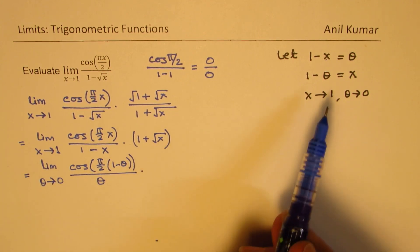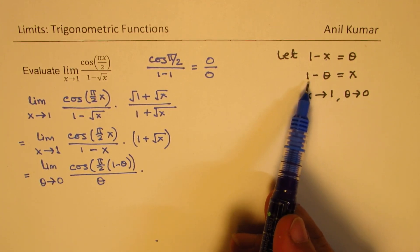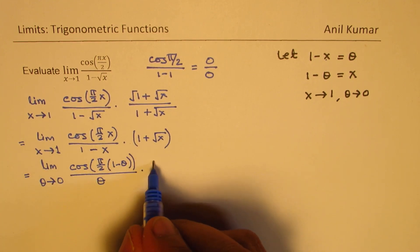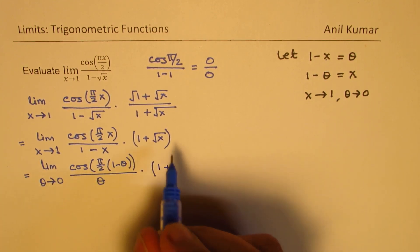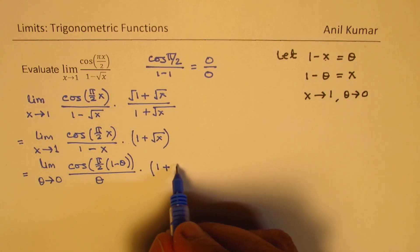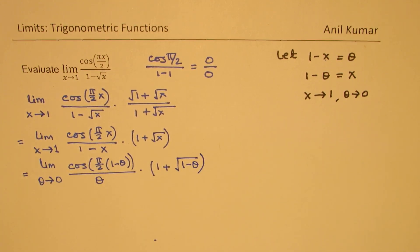Since we have square root of x here, which is square root of (1 minus theta), I will write (1 plus square root of (1 minus theta)).